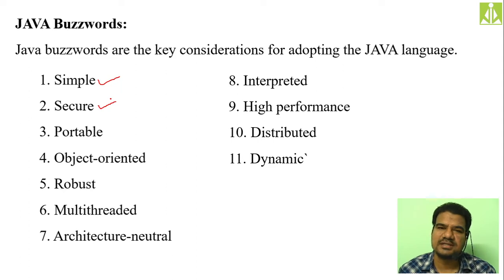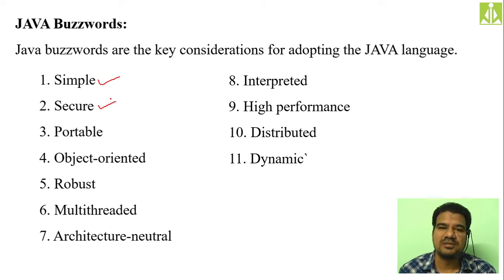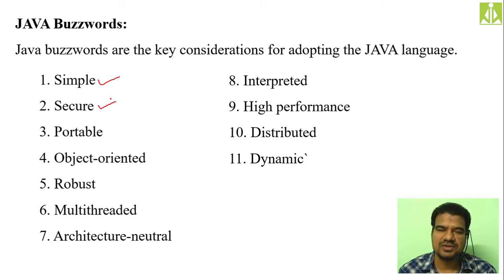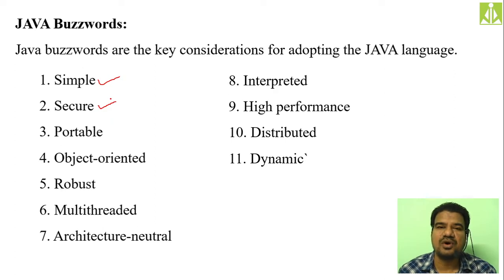Transferring executable code from one platform to another — if the operating system changes on the second system, you cannot execute that executable code copied from the first system. So portability is not supported in regular programming languages like C and C++. But when it comes to Java, portability is purely supported because once you get the byte code, you can copy it to any computer.